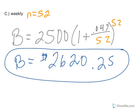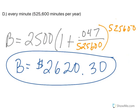So from going weekly, once a week, you have $2,620.25, you go to $2,620.30.